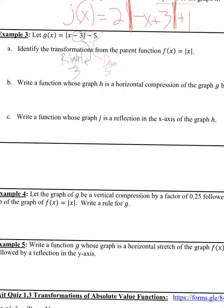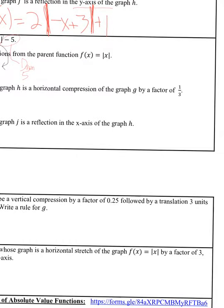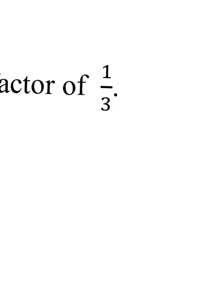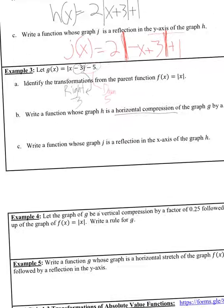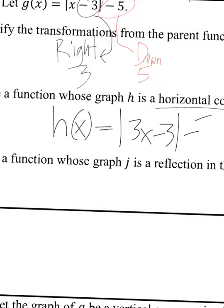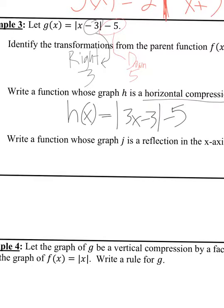Write a function whose graph H is a horizontal compression of graph G by a factor of one-third. Horizontal compression means squishing it from the sides. When you have a horizontal transformation, you flip that number — so one-third becomes 3. You plug 3 on the inside, so H of x equals the absolute value of 3x minus 3, minus 5. When you type that in, it'll look a little skinnier, horizontally compressed.